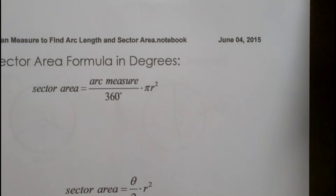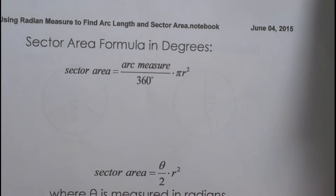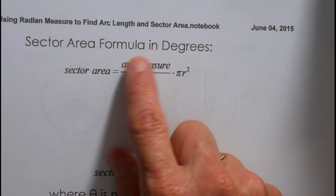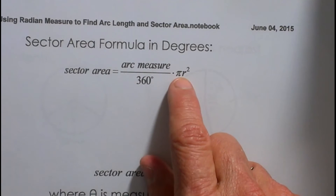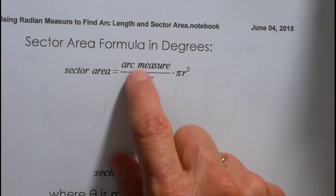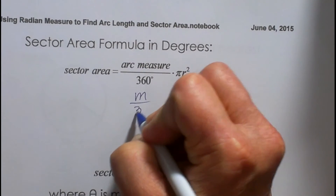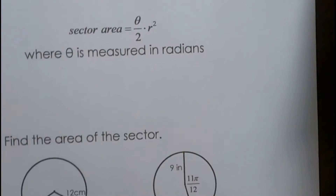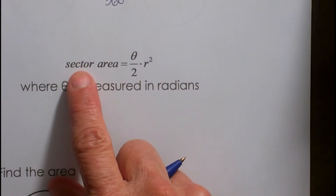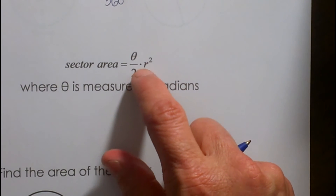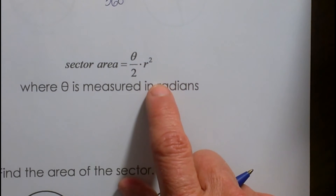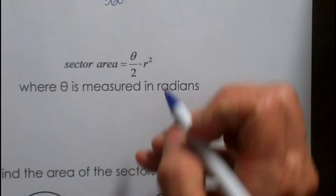Now let's look at sector areas. To find the sector area in degrees, we take the arc measure over 360 — the fraction of the circle — times pi r squared, which is the area of a circle. So we are taking a fraction of the area of the circle. To find sector area in radians, the formula is theta over 2 times r squared, where theta is the measure in radians. It is a pretty simple formula.